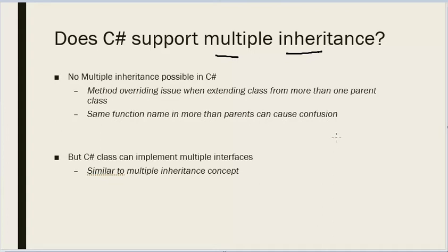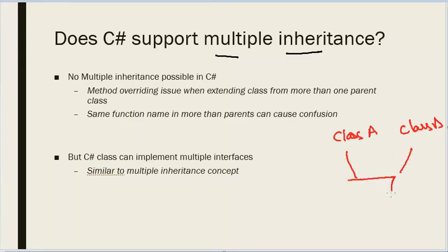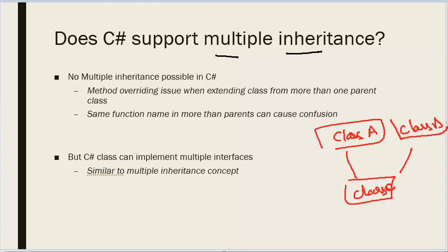What is multiple inheritance? Multiple inheritance is when we have a class A and a class B — abstract classes, whatever — and then there is another class which is called class C. Class C is a child of both class A and class B. Is it possible or not?